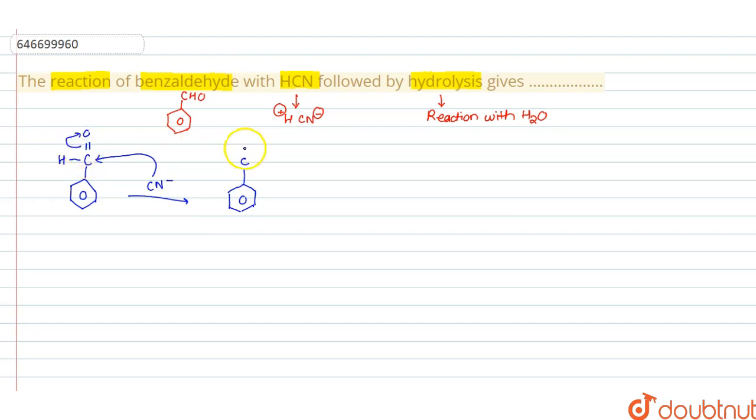You get O minus, a hydrogen attached and CN gets attached here. Now the H plus will be added coming from this HCN. So you will get CH. Now this H plus will be added here to this oxygen.